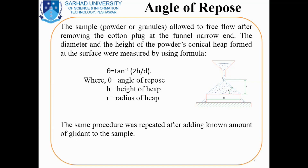The same procedure will also be repeated after adding a known amount of glidant to the sample. Similarly, the height and diameter are measured using the same plugging of the tip of the funnel. The procedure will be repeated three times and their average will be determined. The same procedure with addition of a known amount of glidant will also be repeated three times, and by putting the values in the formula we will get the angle of repose and their average will be determined.